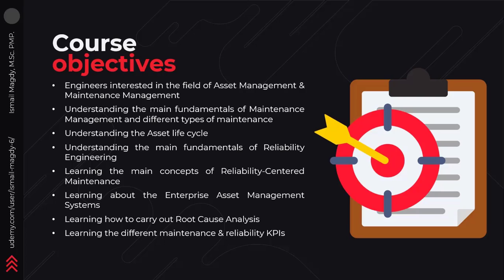By the end of this course, you will have full understanding about all of the main fundamentals of asset management and maintenance management. You will also learn about the asset life cycles and how to manage your asset during this life cycle. You will have a solid understanding about the main concepts of reliability engineering as well as reliability centered maintenance. You will also learn about the enterprise asset management systems and how to choose the suitable system for your company, and we will go through the root cause analysis process and the different maintenance and reliability KPIs.